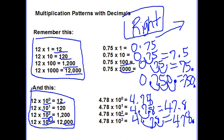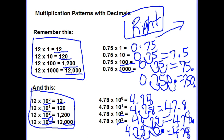Finally, when looking at 4.78 times 10 to the third power, I move the decimal three times: 1 — between the 7 and 8; 2 — behind the 78; 3 — the decimal ends here, but I have a vacant spot. I need to fill that in, making it 4, 7, 8, and 0 — so 4780 with the decimal at the end. That's how we relate what we've learned with whole numbers to decimals.